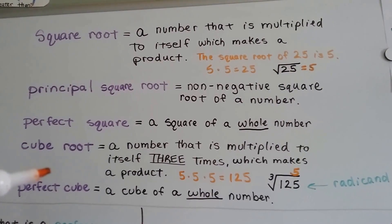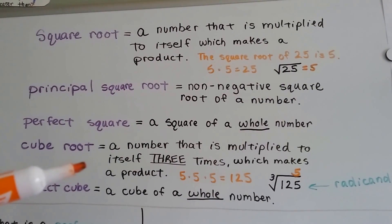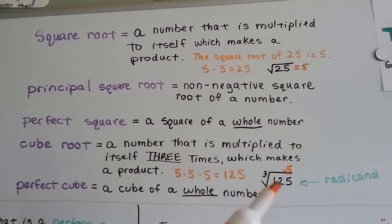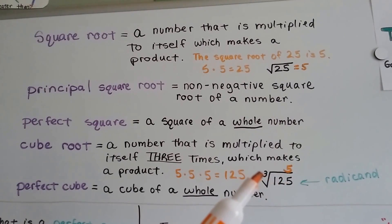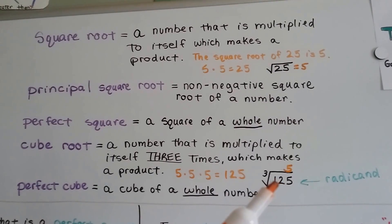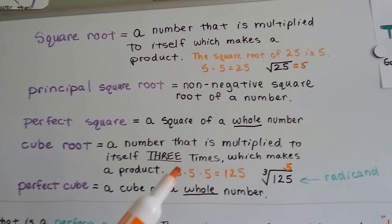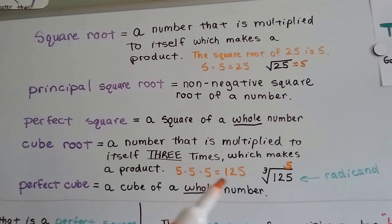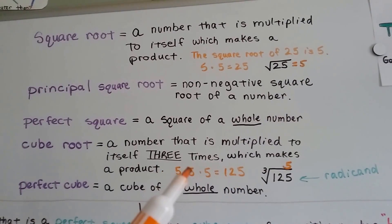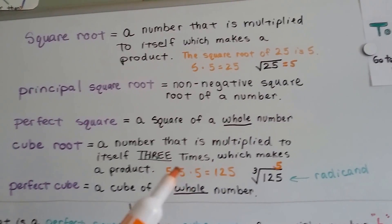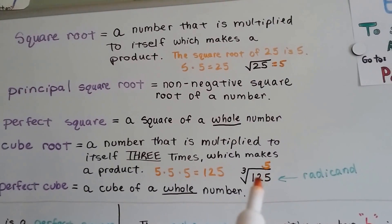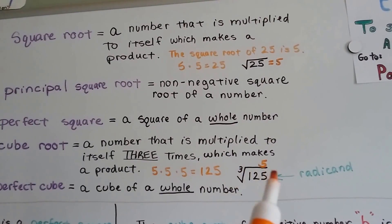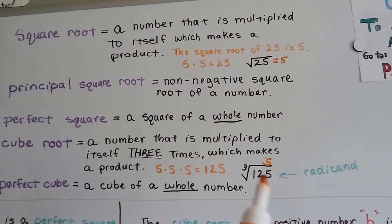A cube root is a number that is multiplied to itself 3 times, and it makes a product. The cube root would be written like this with a little 3. The cube root of 125 would be 5, because 5 times 5 is 25, times 5 is 125. It's 5 multiplied to itself 3 times. We call the number inside this radical symbol the radicand.